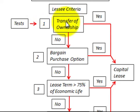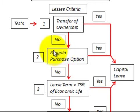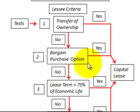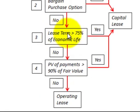The first test is whether the lease transfers ownership of the asset. If yes, we record it as a capital lease. If no, we proceed to the next test: the bargain purchase option. If it has a bargain purchase option, yes, it's a capital lease. If not, we proceed to the third test.